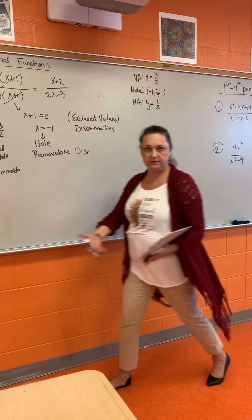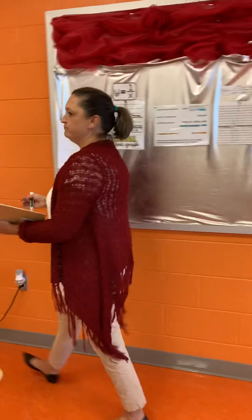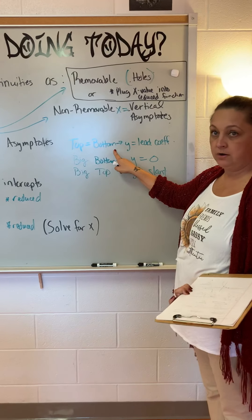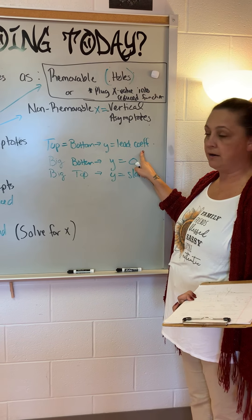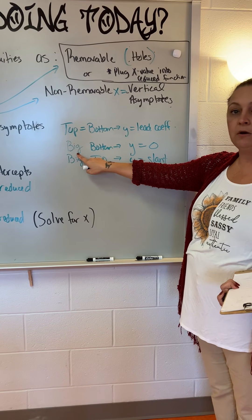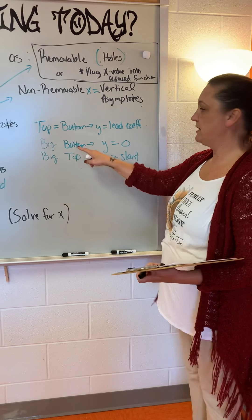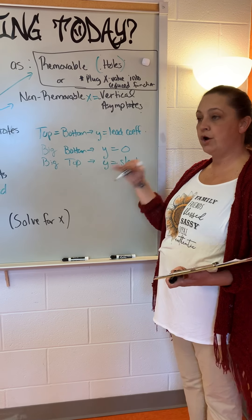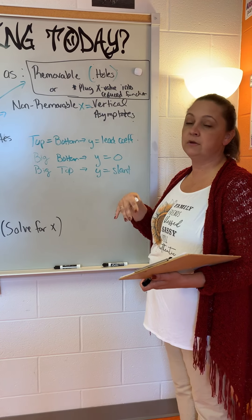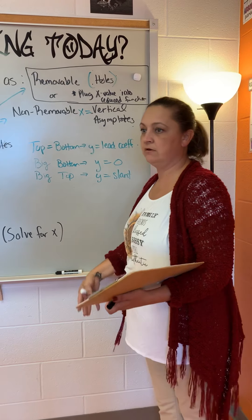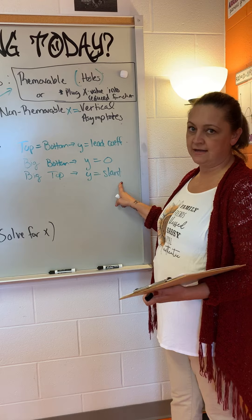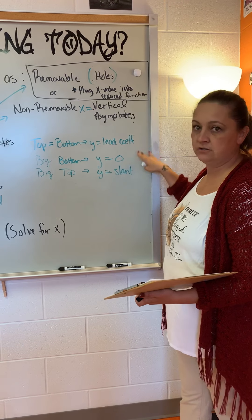For horizontal asymptotes: if the top power equals the bottom power, use the lead coefficients on top and bottom. If the bottom power is bigger, the horizontal asymptote is y = 0. If the power is bigger on top, that results in a slant asymptote. We're not really going to practice slant asymptotes, but those are the two cases you need to understand.